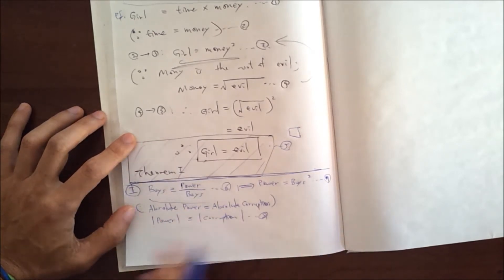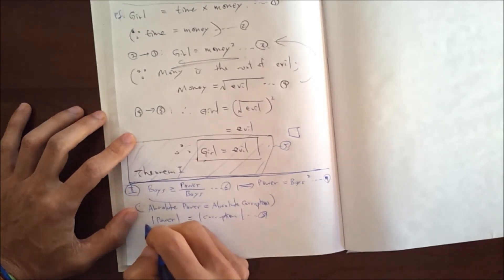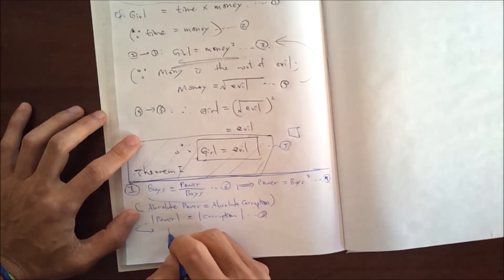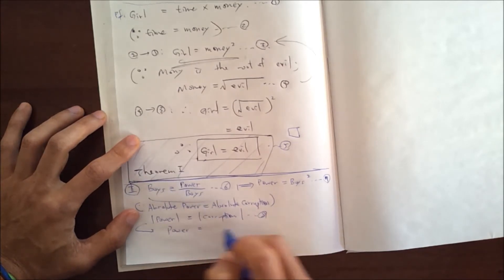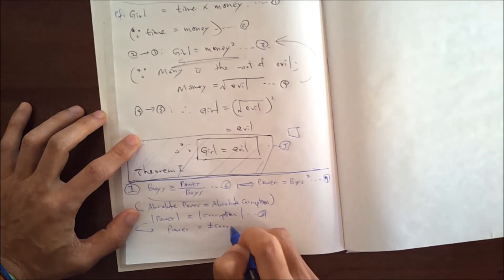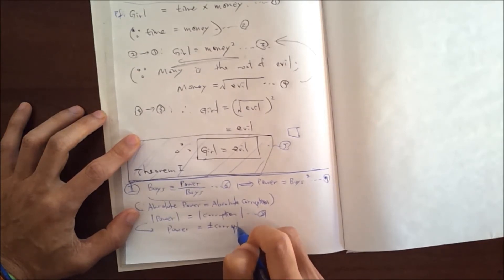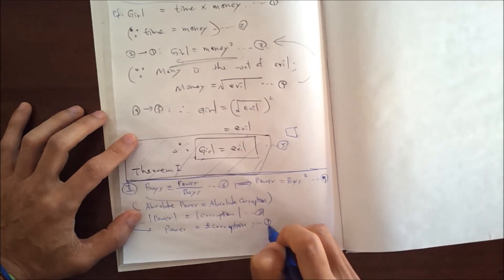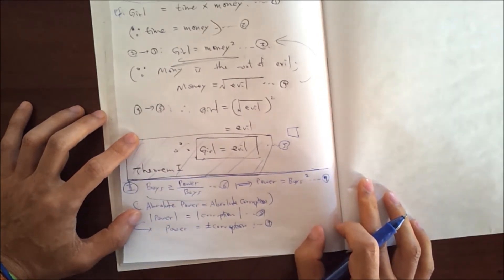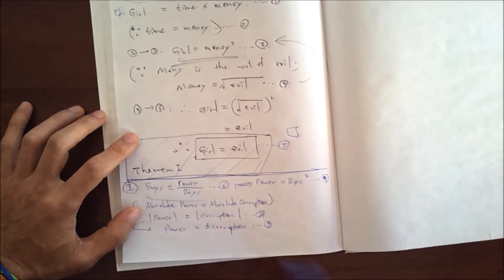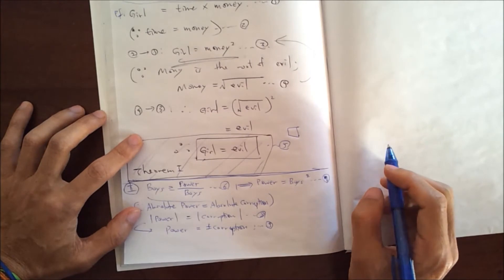Yes, and that means if you take this out and solve it, power equals plus or minus corruption — if you've learned this, probably like 8th grade or something. Let's call this equation 9.